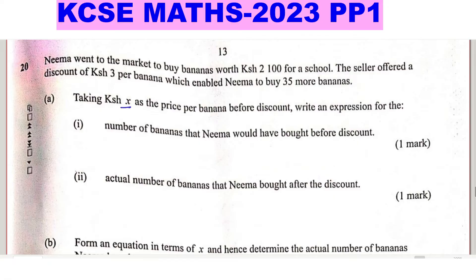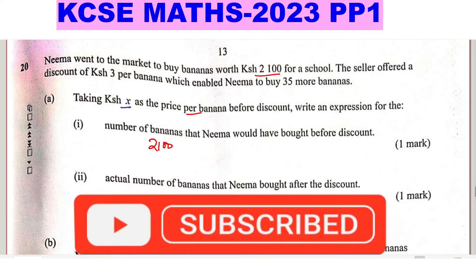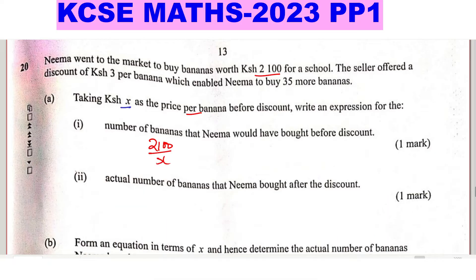Part A: Taking X shillings as the price per banana before the discount, write an expression for the number of bananas Naima would have bought before the discount. Before the discount, Naima had 2100 shillings and each banana cost X shillings, so the number of bananas is 2100 divided by X.